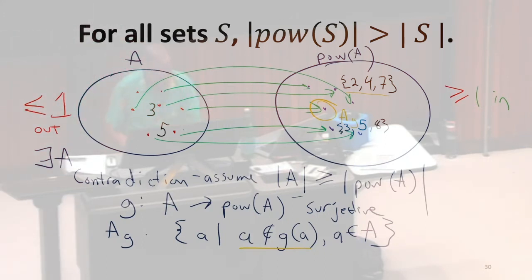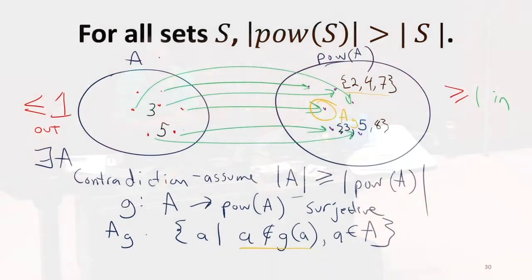Remember that G is surjective. Every subset of A is in the power set. So this AG set that I've defined is here. It's an element of the power set. It's some subset of A, so it's in that power set set.